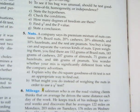You buy a large can and separate the various kinds of nuts. Upon weighing them, you find there are 112 grams of Brazil nuts, 183 grams of cashews, and so forth, all the way up to 446 grams of peanuts. You wonder whether your mix is significantly different from what the company advertises.